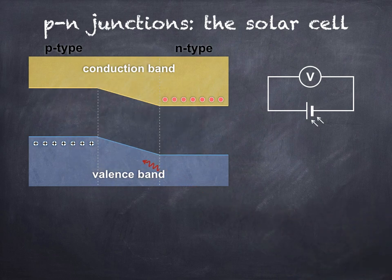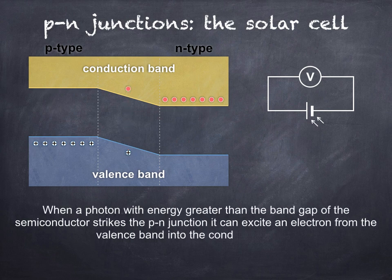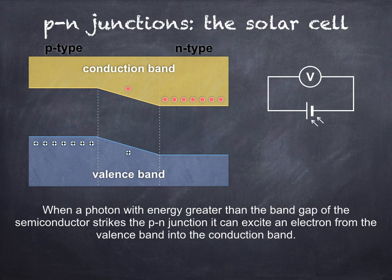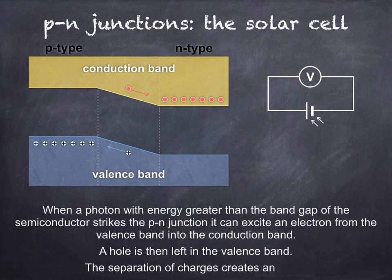So, when a photon of energy greater than the band gap of the semiconductor strikes the p-n junction, it can excite an electron from the valence band into the conduction band. You'll have seen that a hole is also left in the valence band. The electron moves to the conduction band of the n-type, and the hole moves to the valence band of the p-type. The separation of the charges creates an EMF. This is known as the photovoltaic effect.